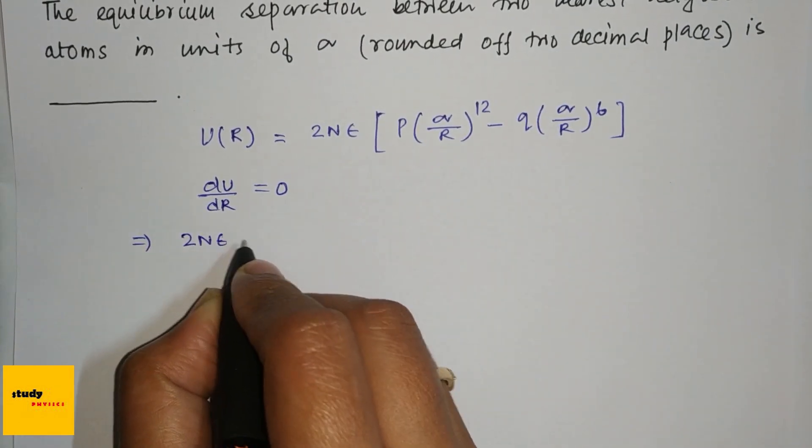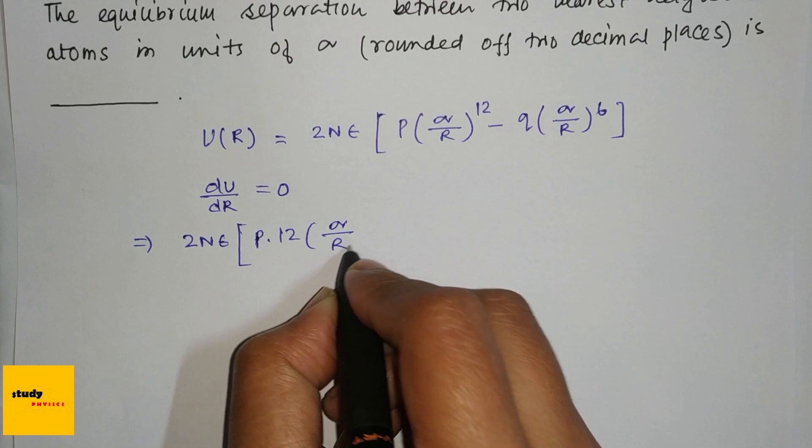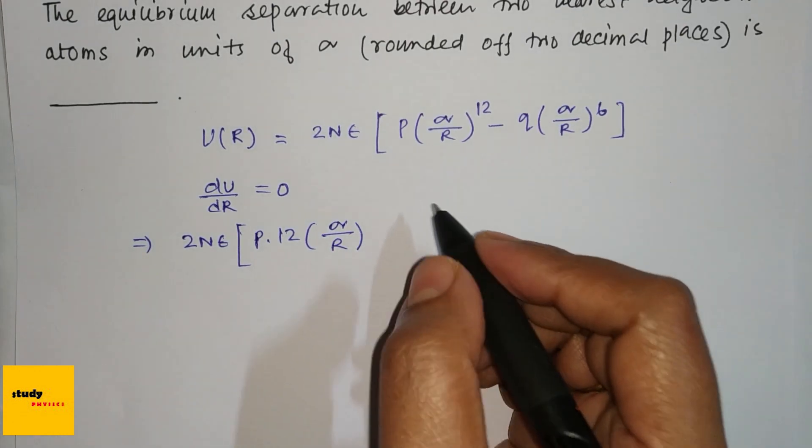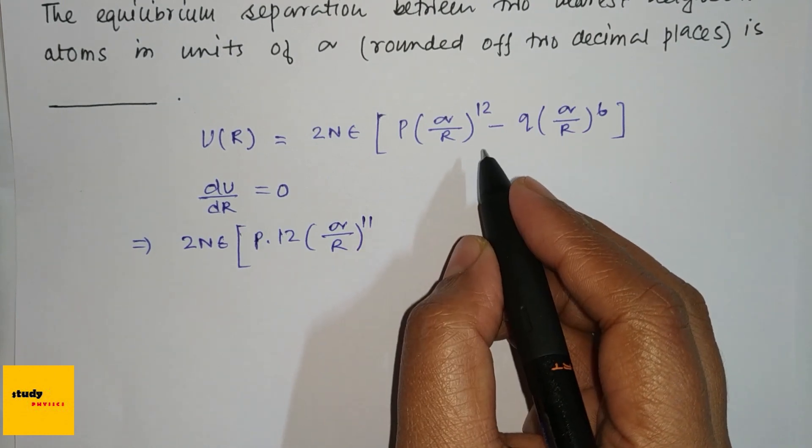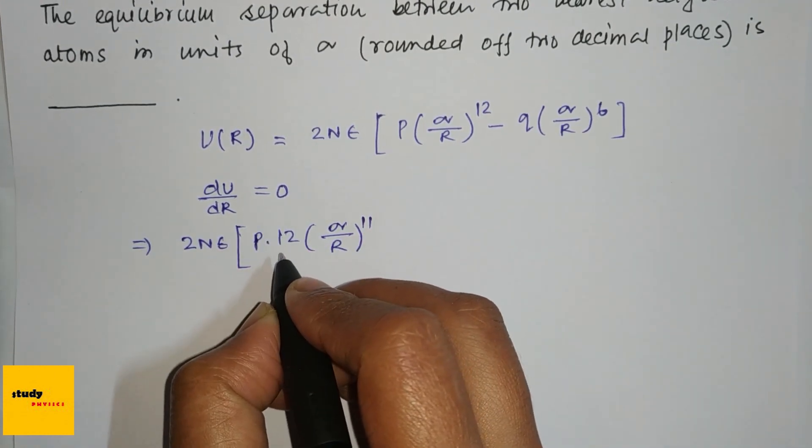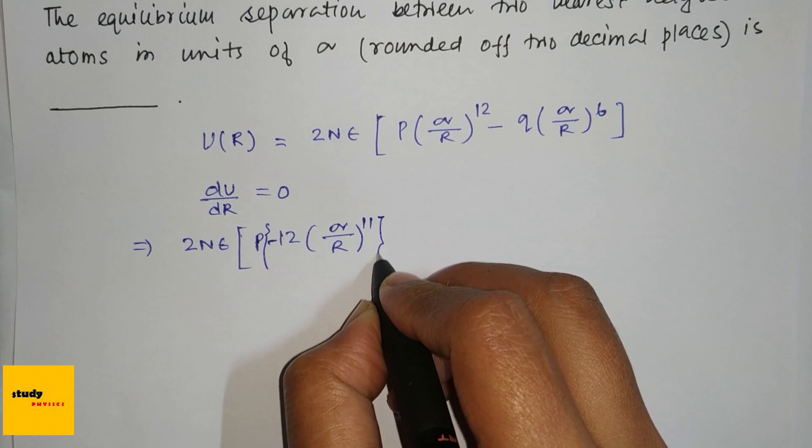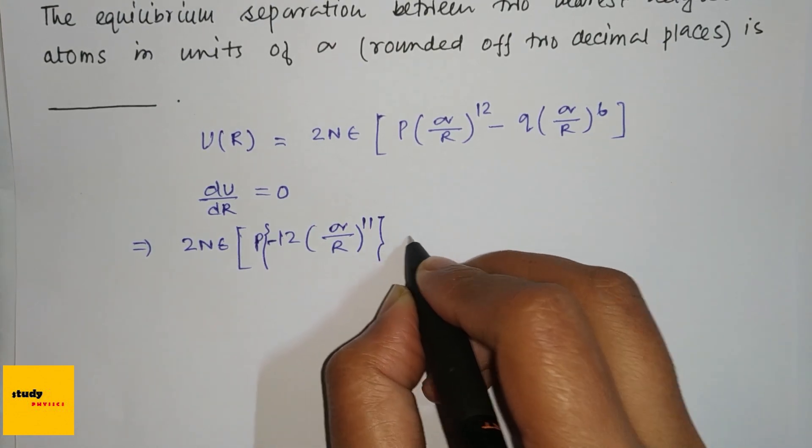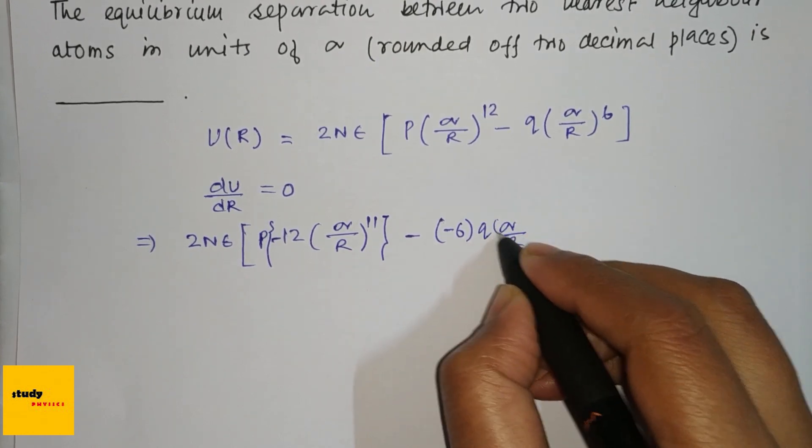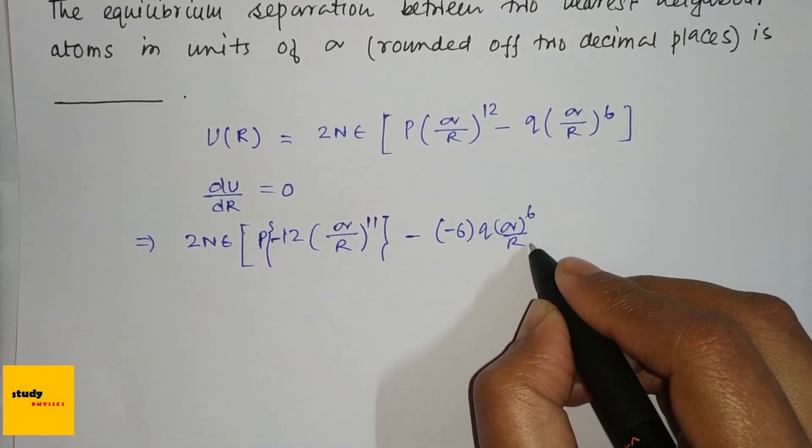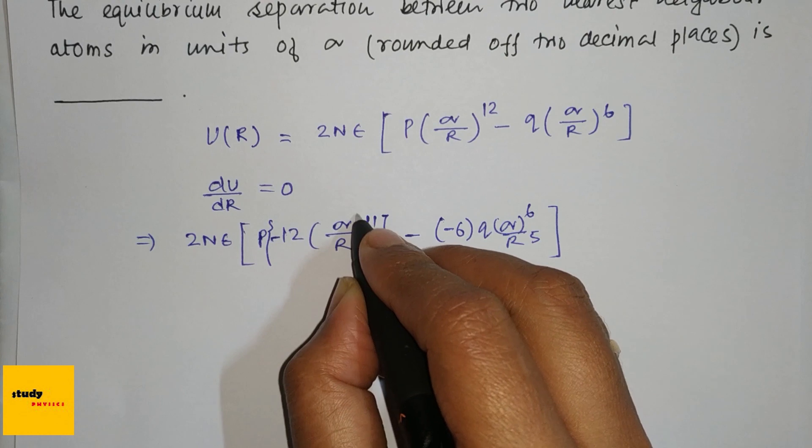Therefore, 2Nε[p×12×(σ^12/R^11) - 6q×(σ^6/R^5)] equals 0. So minus 12p(σ^12/R^11) plus 6q(σ^6/R^5) equals 0.